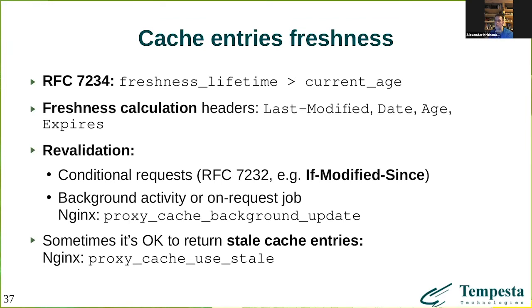HTTP proxies have to deal with the freshness of HTTP responses. There are several HTTP headers which control until what time a response is considered fresh and should be sent to clients. However, in some cases — for example, if the backend server is unavailable, or we face a DDoS attack and don't want to overload the upstream server — it sometimes makes sense to serve stale web cache content to clients. Most proxies have control directives to serve stale and non-fresh content from cache.